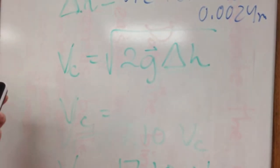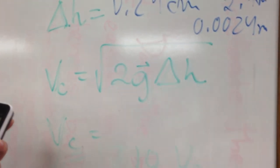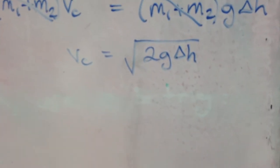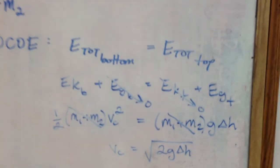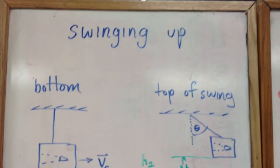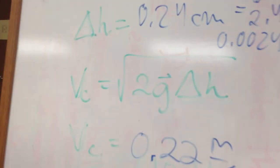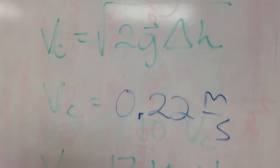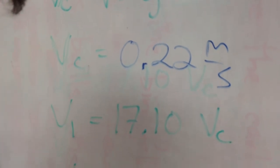0.0024 times gravity times 2 square root. We have a final velocity of 0.22 meters per second.